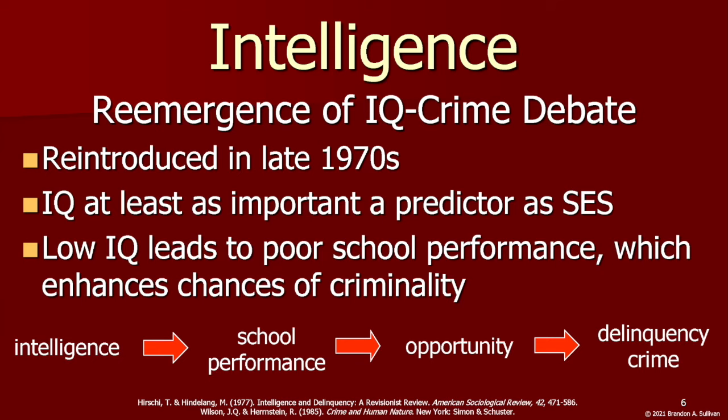This debate was reignited in the late 1970s, when criminologists Travis Hirschi and Michael Hindelang suggested IQ is at least as important in predicting crime as socioeconomic status. They proposed that low IQ in juveniles caused poor performance in school, which was linked with decreased opportunities, and therefore was related to both juvenile delinquency and criminality as an adult.